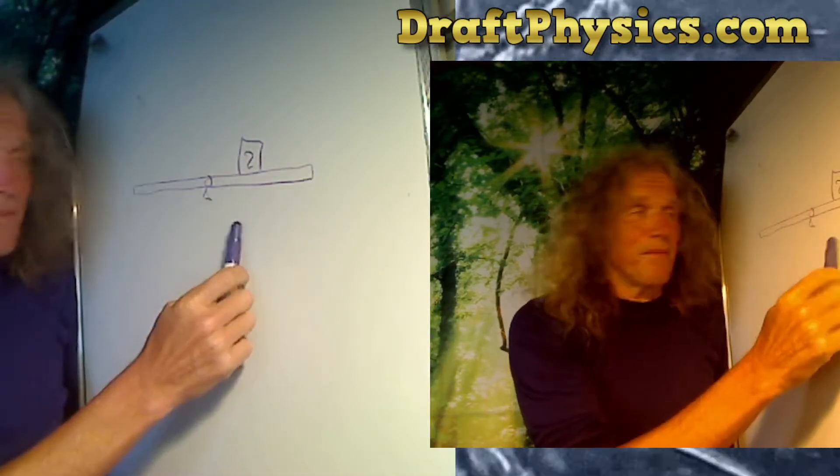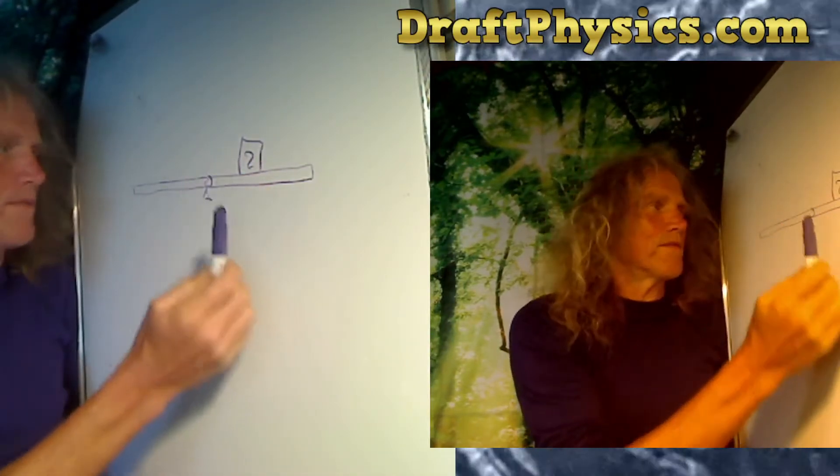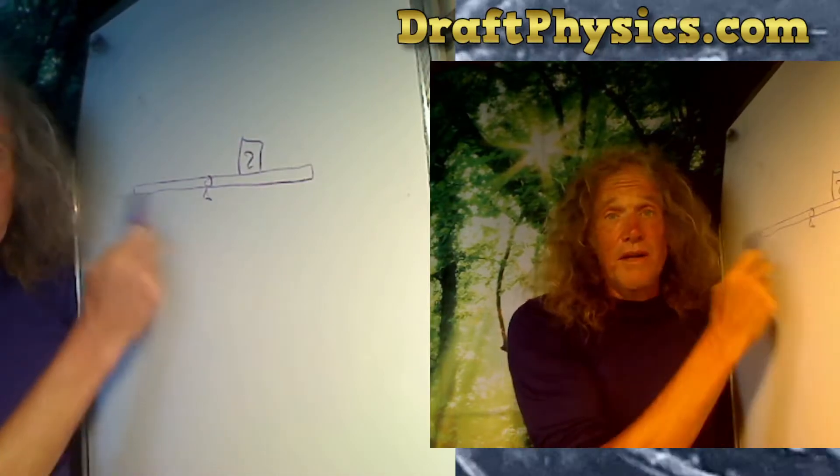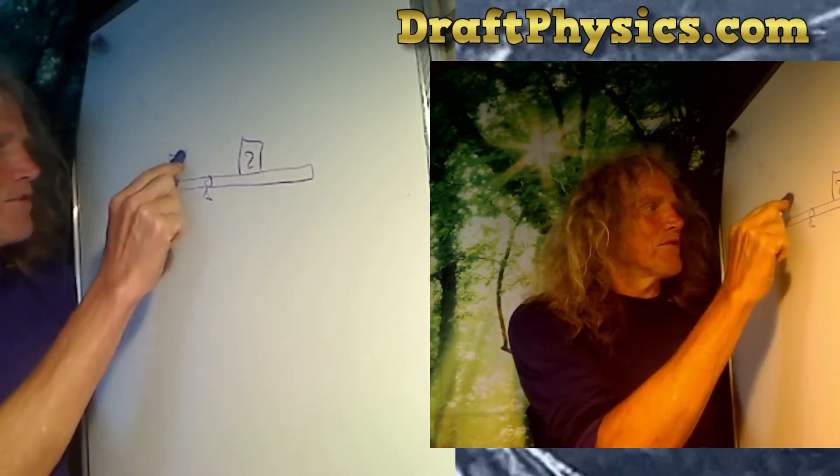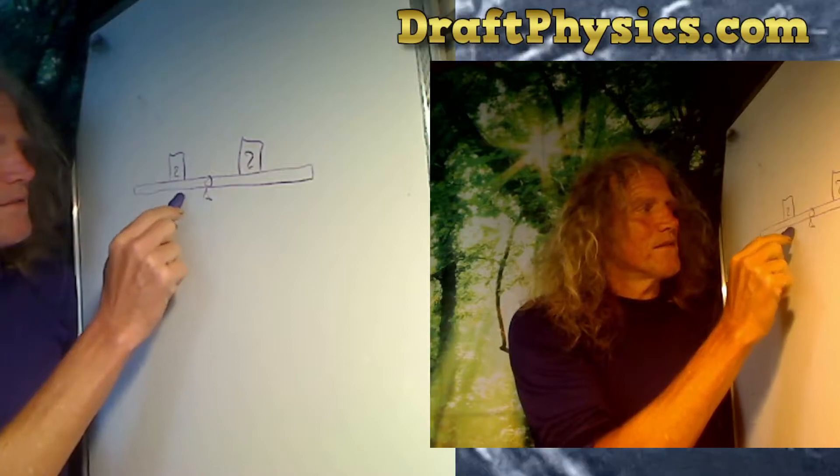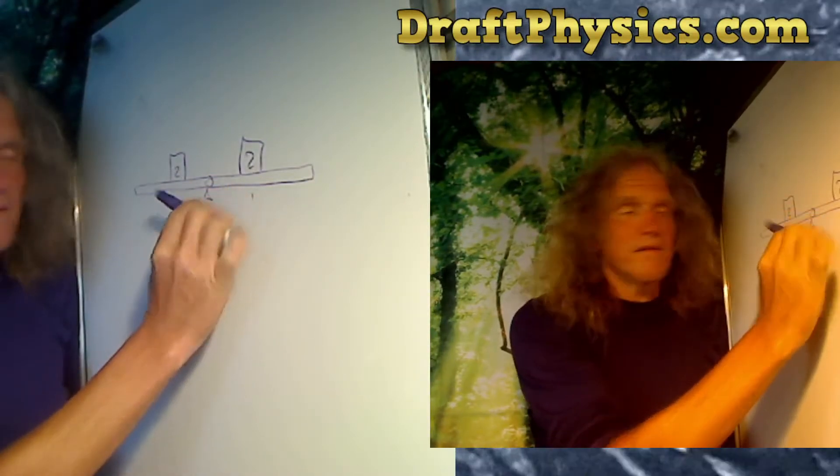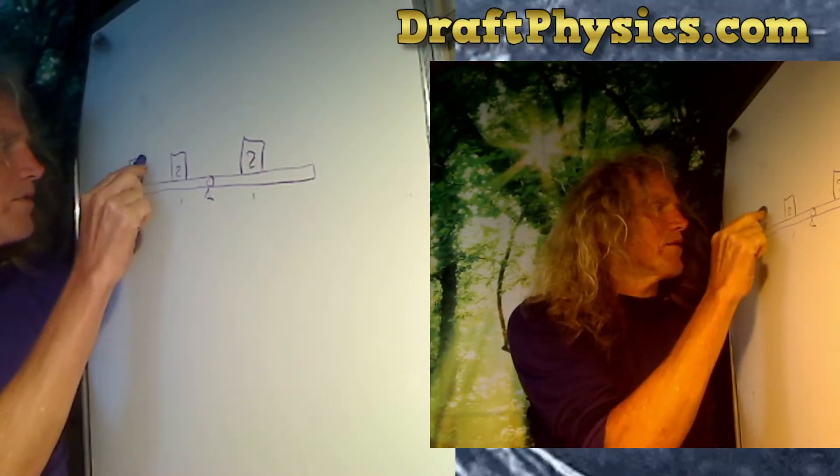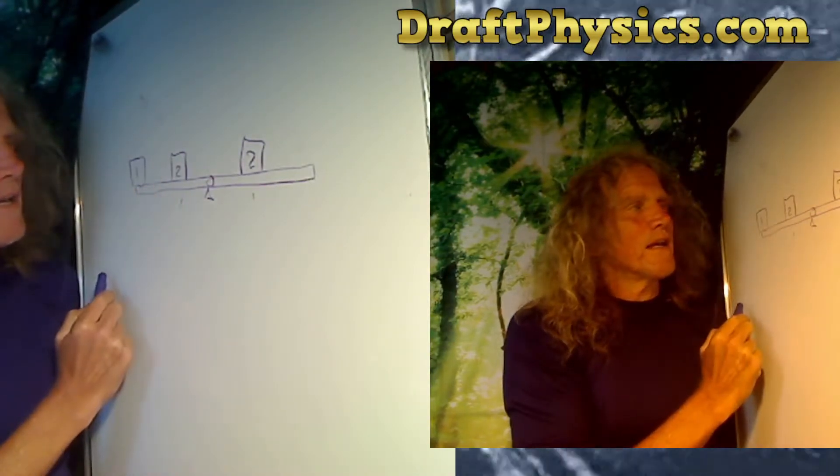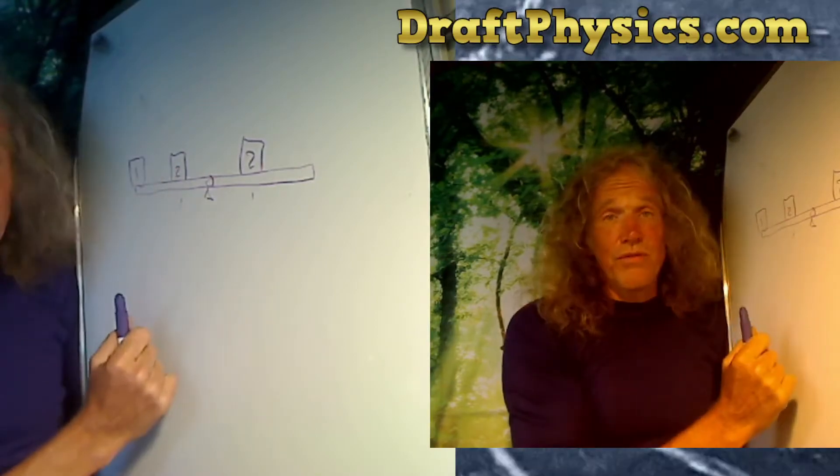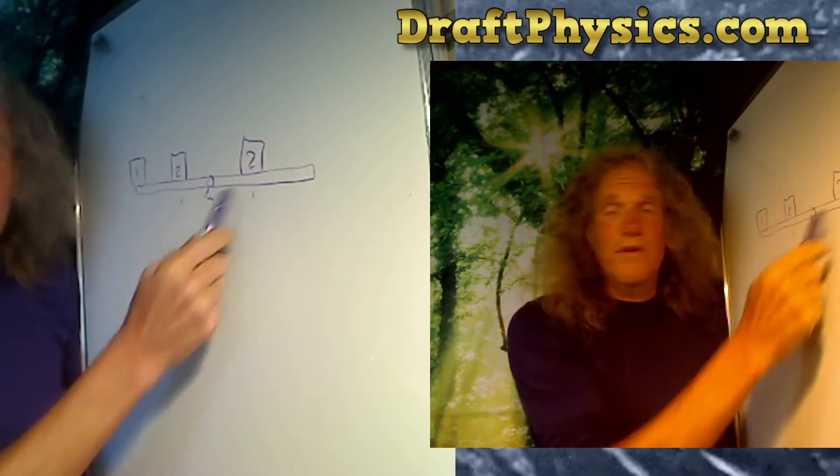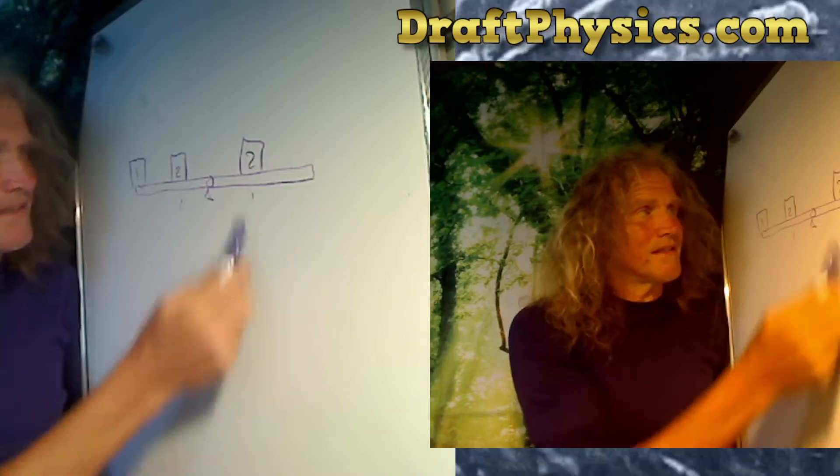That creates a certain amount of torque or movement in the lever. Depending on what I put other places, I could put a two here at the same distance from the fulcrum and those two things will balance. The trick of the lever is that I could put a one out here and the one and the two will balance perfectly.